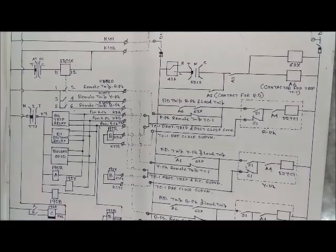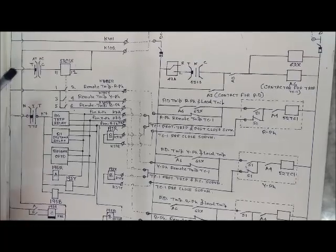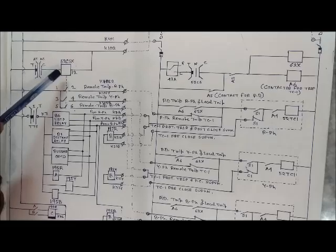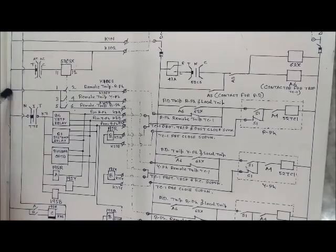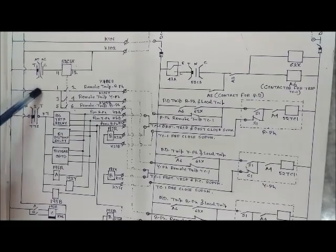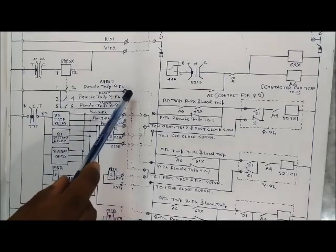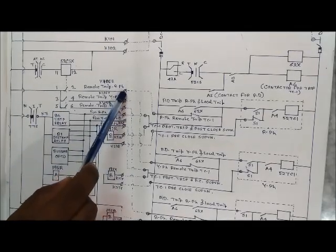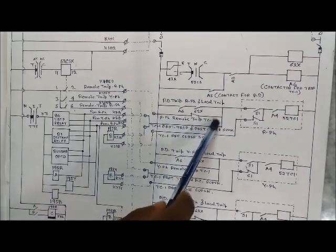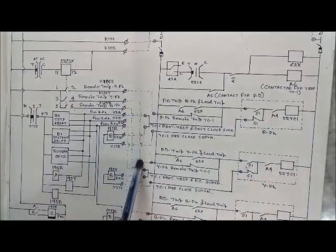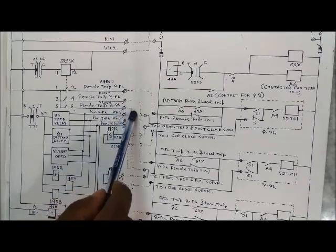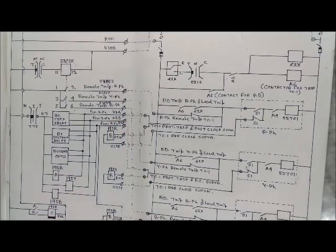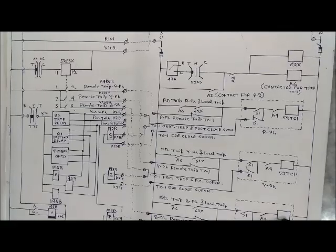For remote tripping operation, when a tripping pulse is given from the control switch, the relay energizes. As soon as this relay energizes, its contacts come to NC position, so the DC — K101 — comes to contacts 1, 2, 3, 4, 5, 6 and to the terminal. Via cable to the R phase remote trip into TC1, via this to the Y phase remote trip to 52TC1 of the B phase — as soon as the trip coil energizes, the breaker goes to the OFF condition.